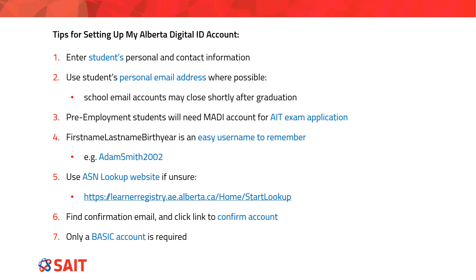Pre-employment students should take note that they will need this account again at the end of the program when they come to apply for their AIT exams. We recommend using an easy-to-remember username for the MyAlberta Digital ID. There are links at the relevant pages to look up your Alberta student number if you are unsure. At the end of the process, it is important to check the email address used and click the link to confirm the account. It's only a basic account that is required, but it is important that the email address is confirmed.